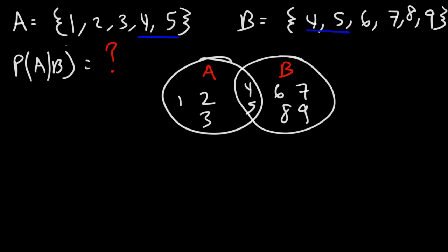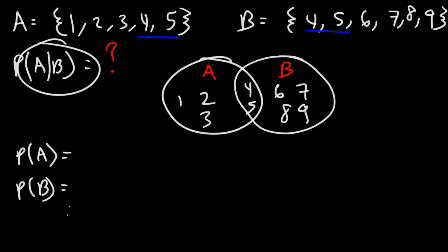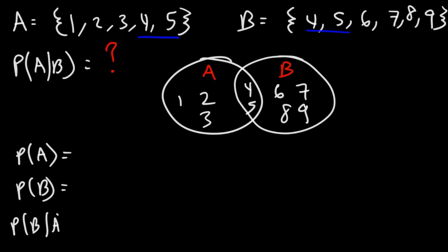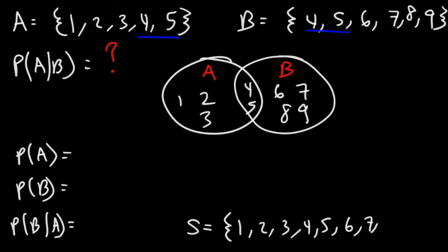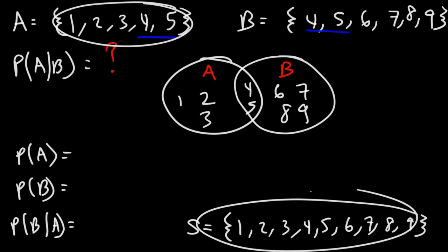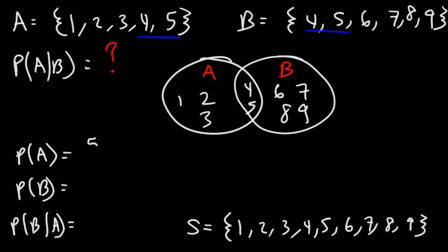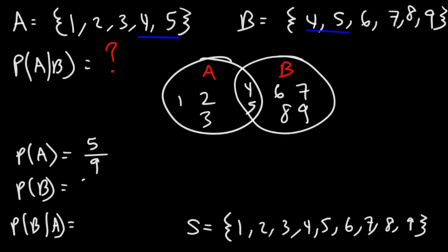In order to calculate this using Bayes' Theorem, we need the probability of event A occurring, the probability that event B will occur, and the reverse conditional probability — the probability that B will occur given that A has already occurred. The sample space represents all possible numbers in A and B — the natural numbers from 1 to 9. A has 5 out of 9 possible numbers, so the probability of event A is 5 over 9. B has 6 numbers out of 9, so the probability of event B is 6 over 9.